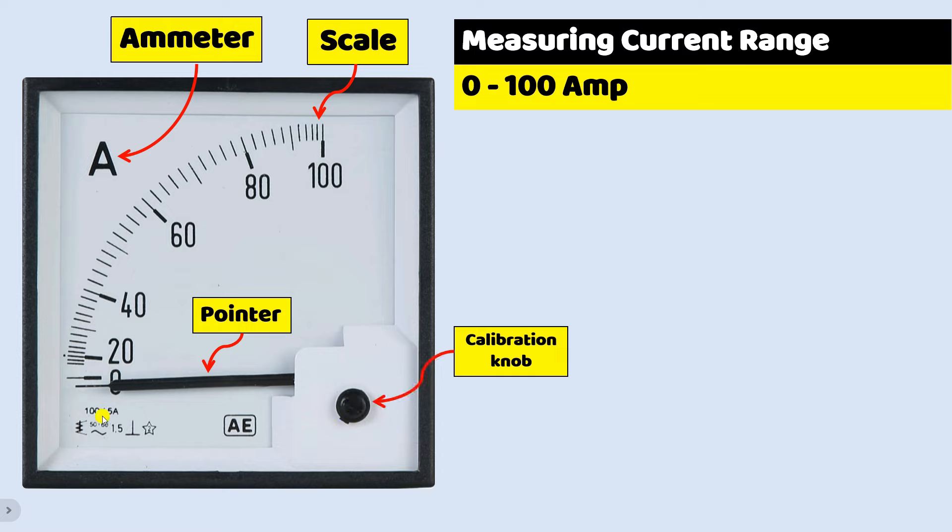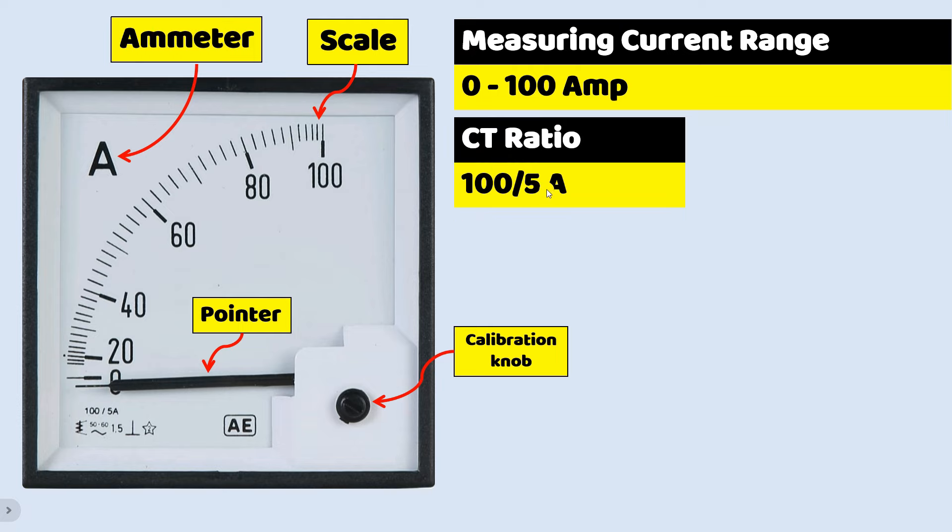Apart from this, it is written here 100 by 5. It means that the CT which is connected to this ammeter, ratio of that CT must be 100 by 5. It means that the ratio of CT is given here.